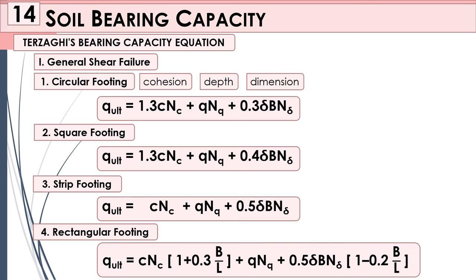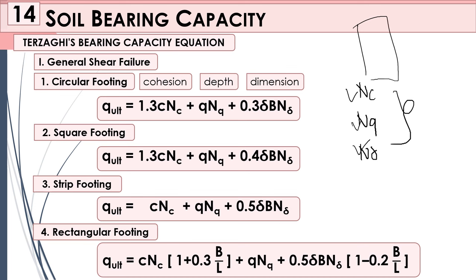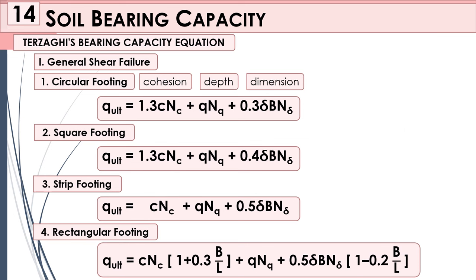As you can see in all four formulas, you have Nc, Nq, and Nγ — these are your bearing capacity factors. In most given problems there is a table where you can find the values of Nc, Nq, and Nγ. But in some problems or in the board exam, the values of Nc, Nq, and Nγ are not given, so we have formulas to solve for them.